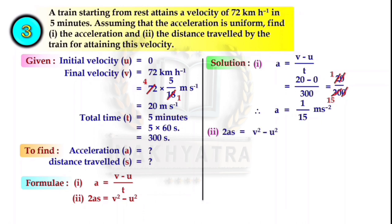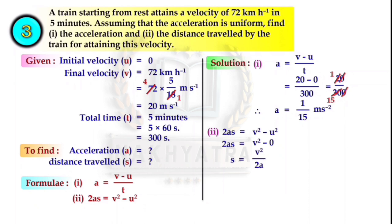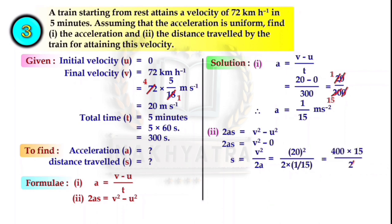For finding the distance traveled, we use 2aS = v² - u². Since U = 0, we get 2aS = v², so S = v²/(2a) = 20² / (2 × 1/15) = 400 × 15/2 = 3000 meter, which is 3 kilometer. The acceleration of the train is 1/15 m/s² and the distance traveled is 3 kilometer.